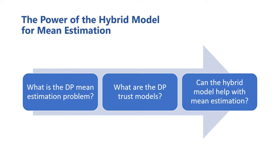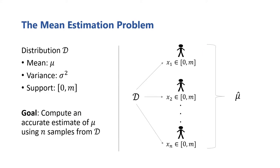Once we've defined these models, we'll go on to developing a mean estimator in the hybrid model which, under certain assumptions, always outperforms analogous mean estimators in the classic trust models. So with that, let's dive right into defining the basic mean estimation problem.